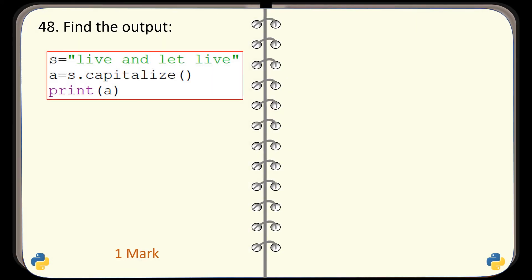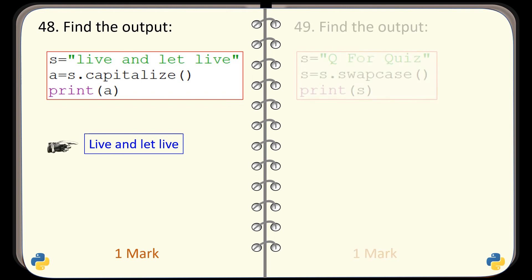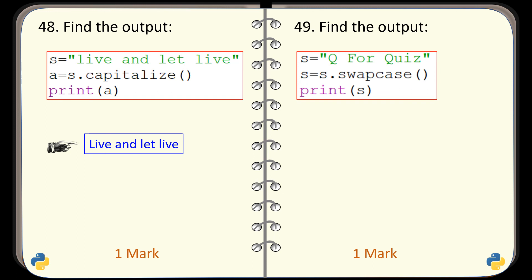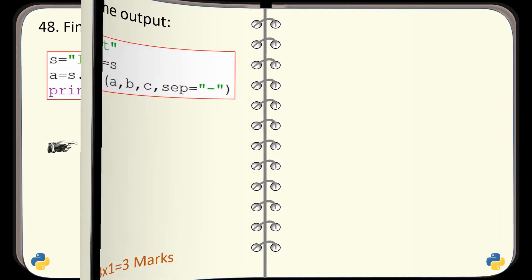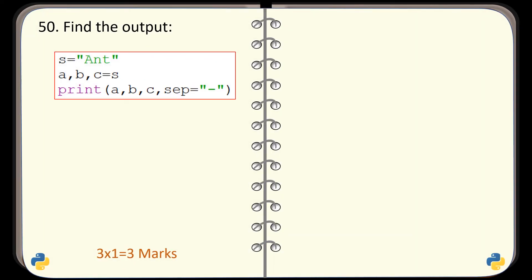Question number 48. Find the output of this given code. And the correct output is this one. Question number 49. Find the output of this code. And the correct output is this one. Question number 50. Find the output of this given code. And the correct output is this one.